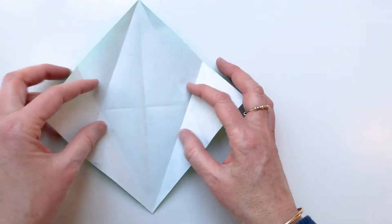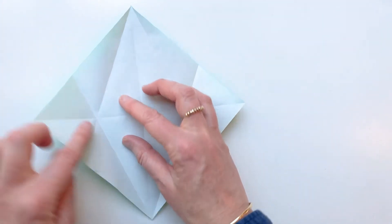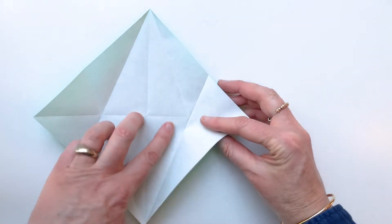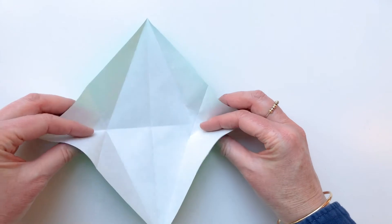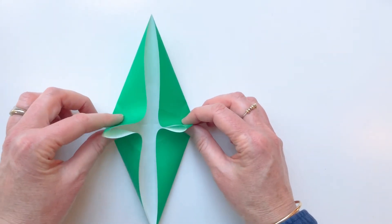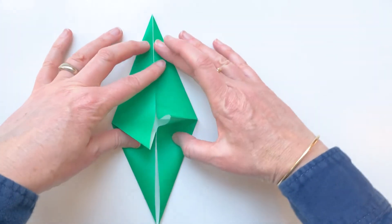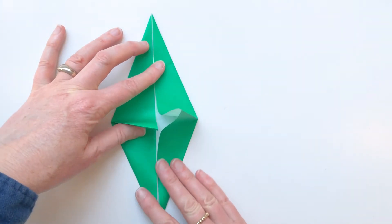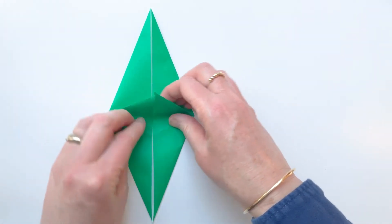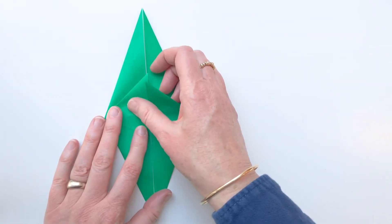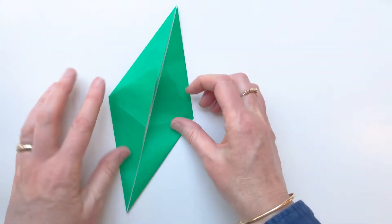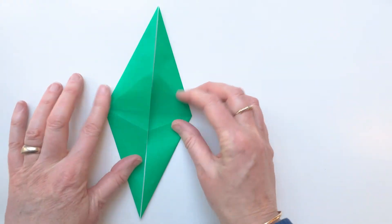Once we've done all four sides, you then take the edges where the lines cross over. You can see that. And you gather them up and you sort of pinch them together. And bring these edges into the center. So you end up with a nice diamond. And with these bits that are sticking up, you gently press them flat so that they point upwards. Like that.